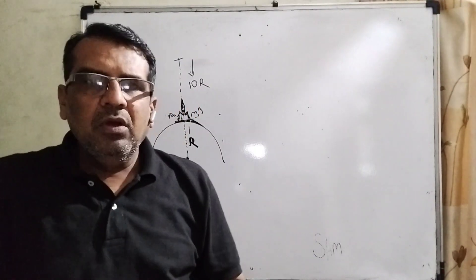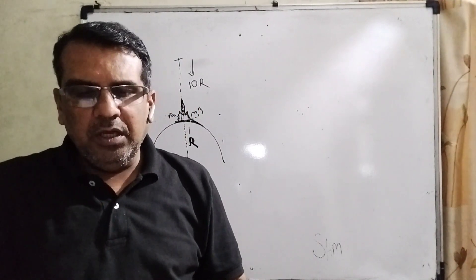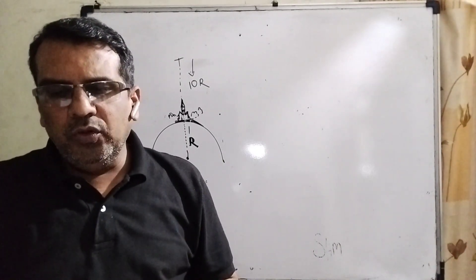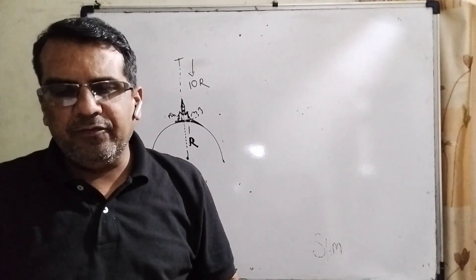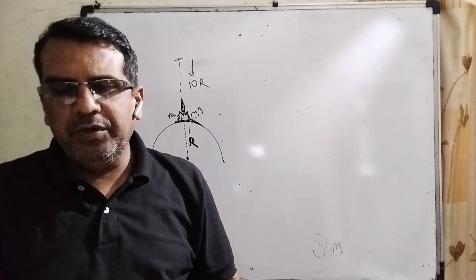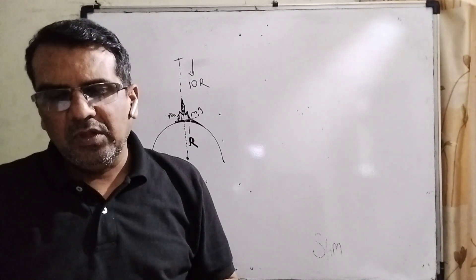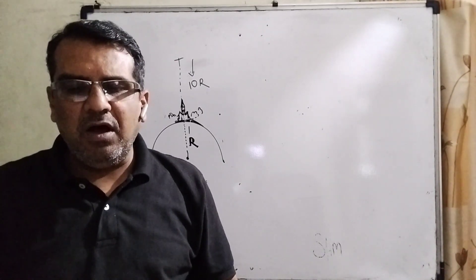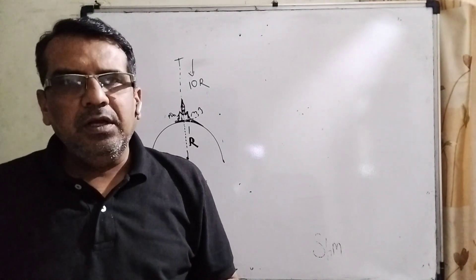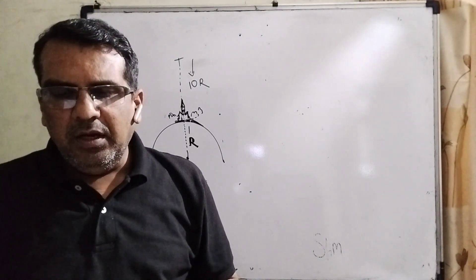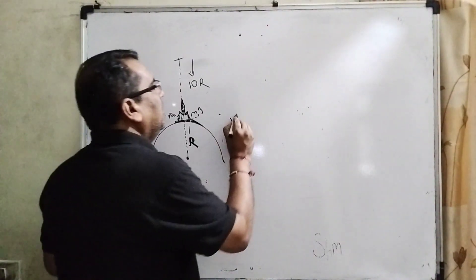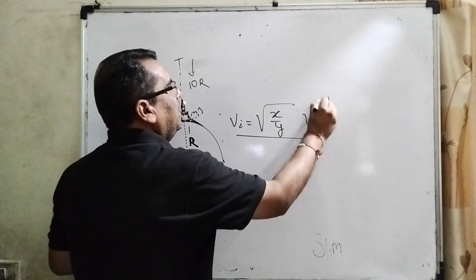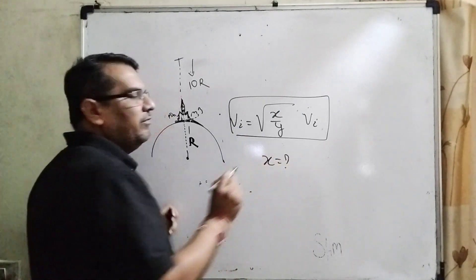Okay, what does the question say? Here the question is: the initial velocity Vi required to project a body vertically upward from the surface of the earth to reach a height of 10R, where R is the radius of the earth, may be described in terms of escape velocity Ve, such that Vi equals root(x/y) times Ve. Then we have to find out the value of x.